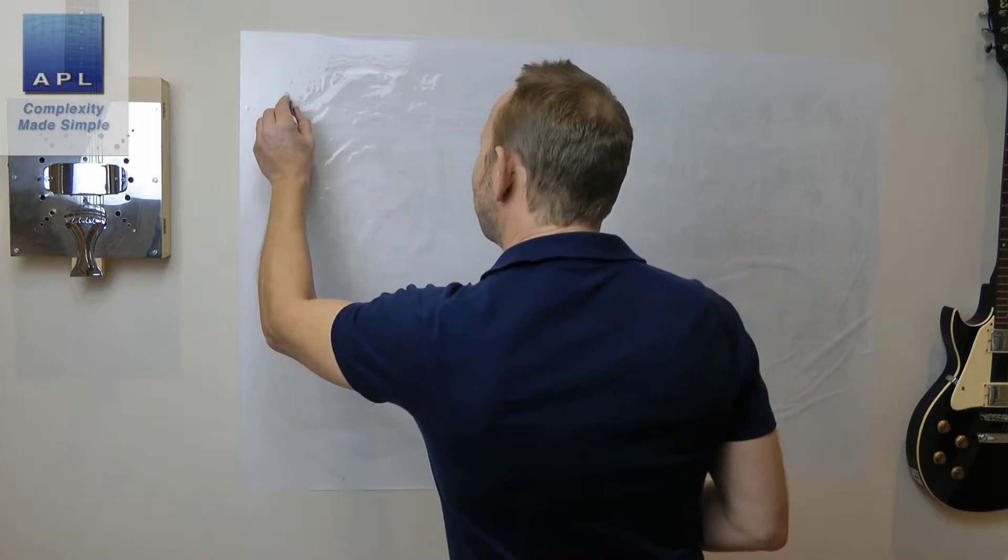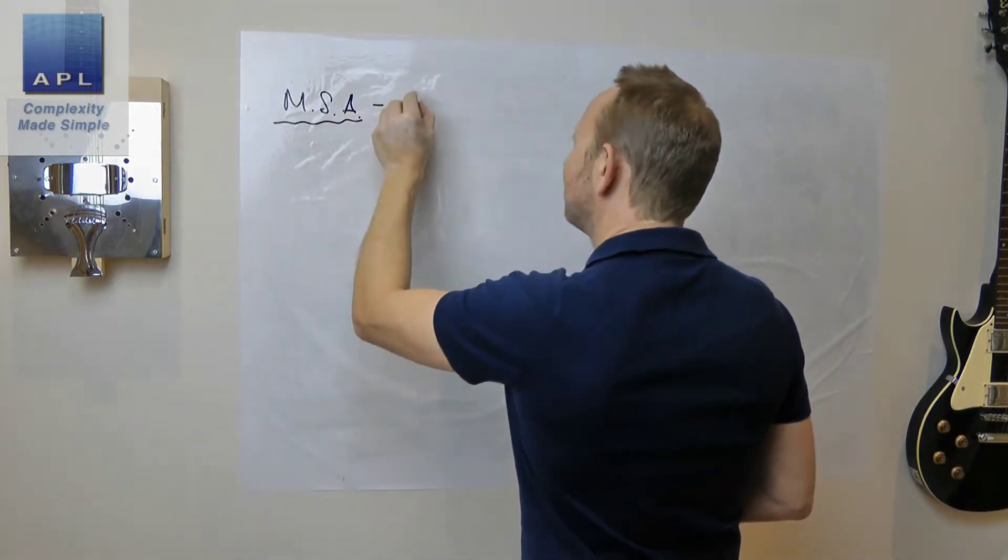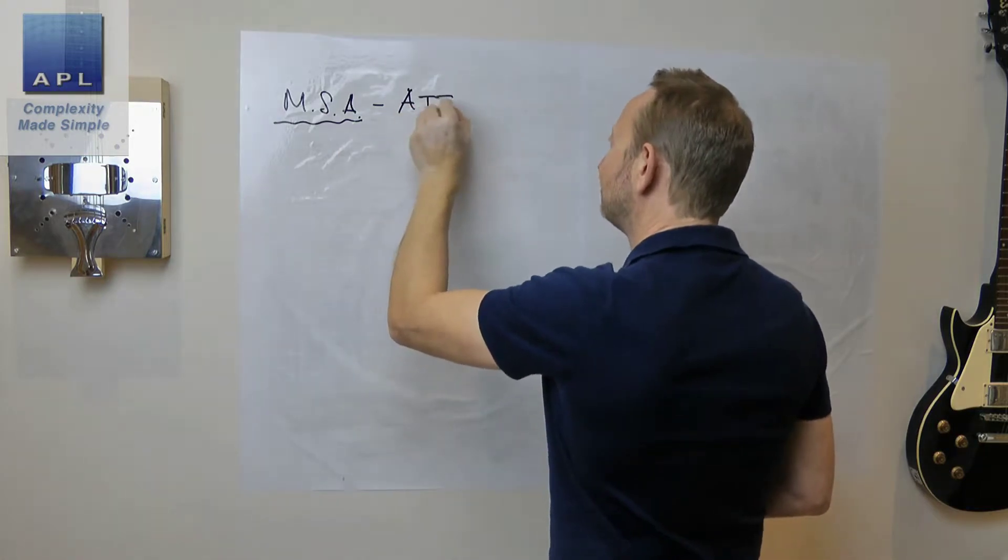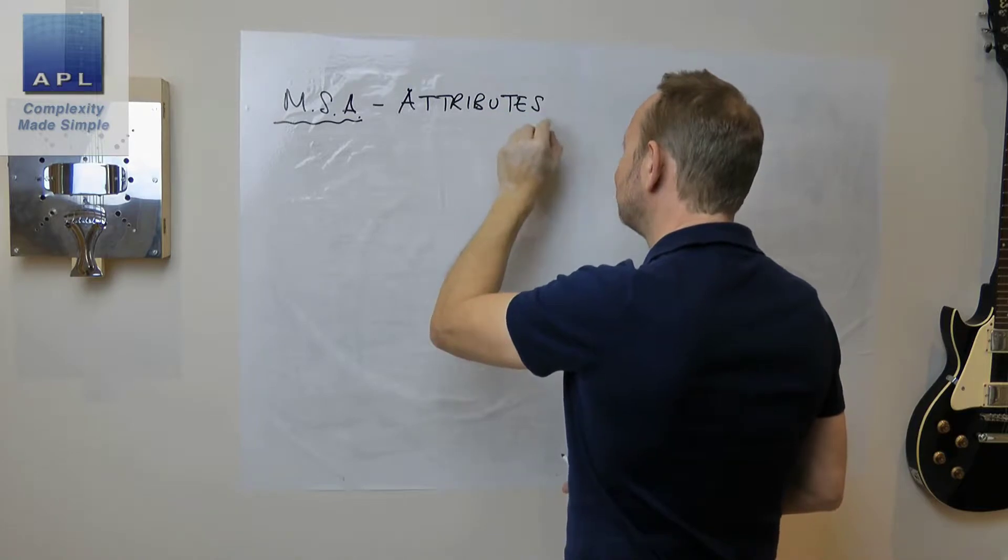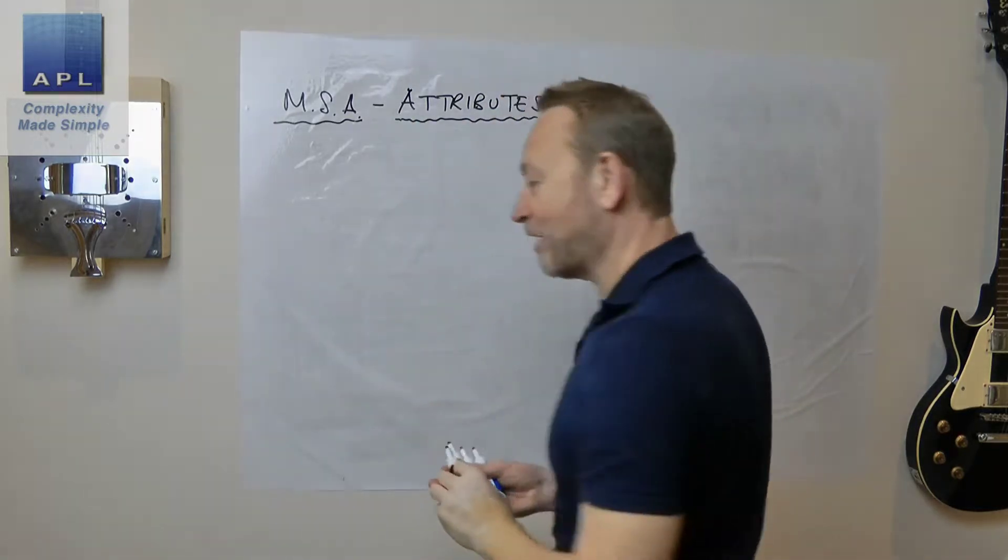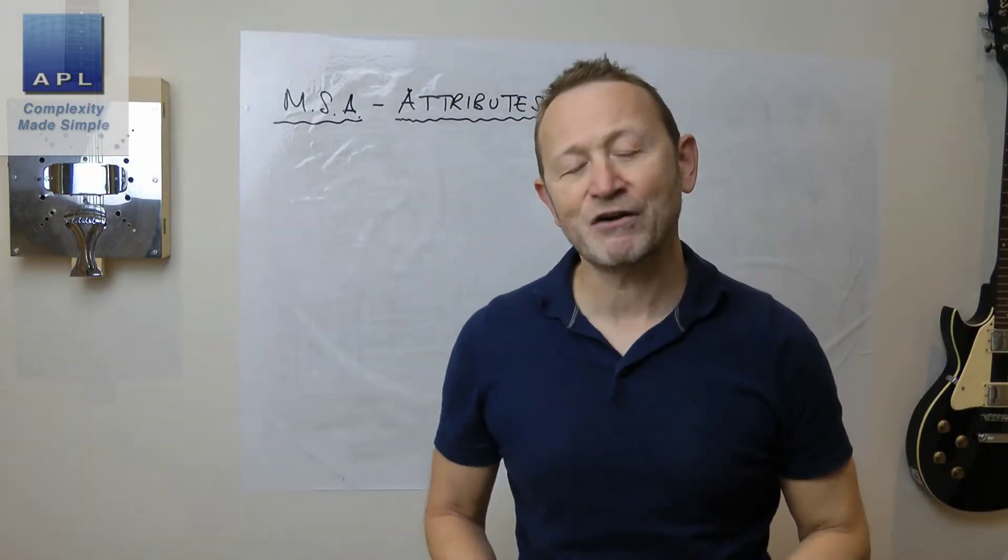But let's take a look at this. We're going to take a look at MSA for attributes, pass and fail. Often it's some kind of cosmetic inspection, but it doesn't have to be just cosmetic inspection.